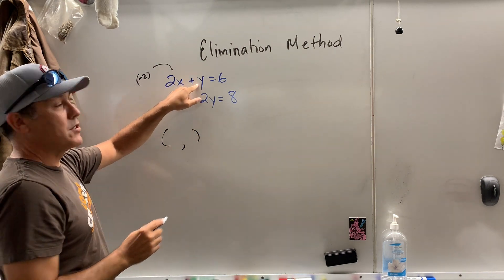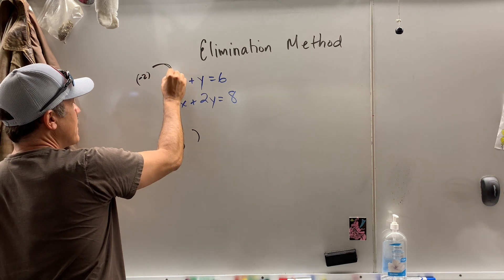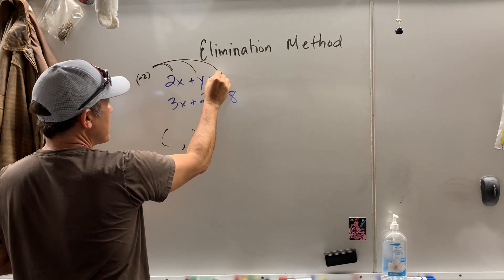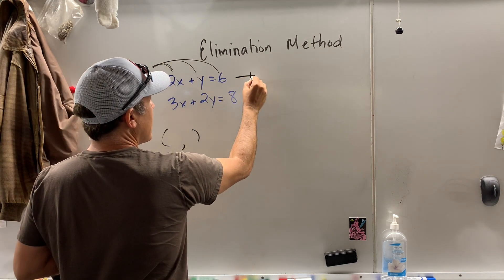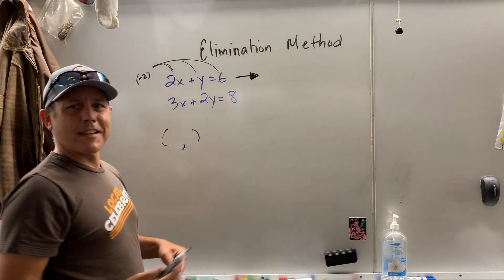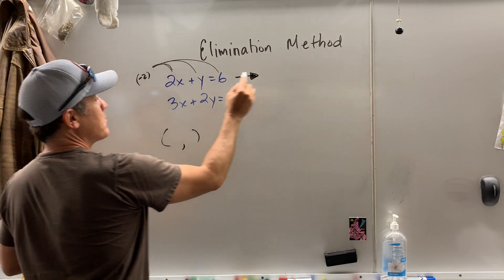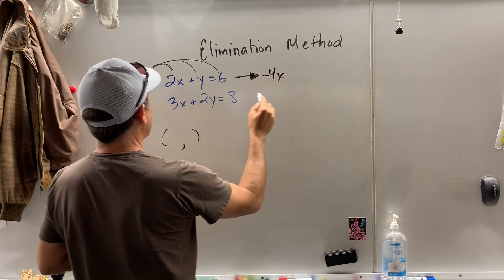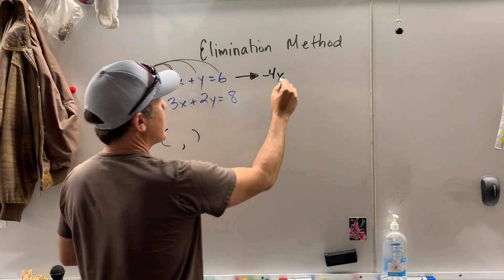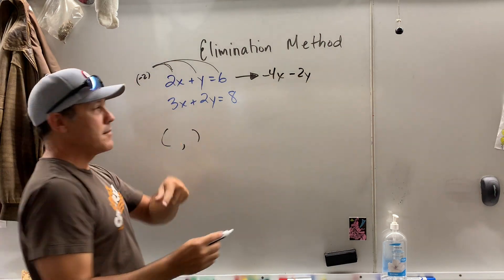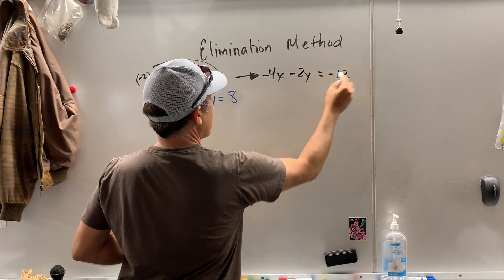Well, if I multiply this by negative two, I got to be equal and fair about it and multiply everything by negative two. So I invented this little method. At least I think I invented it. Put a little arrow. What is negative two times 2x, negative 4x, negative two times y, negative 2y, and negative two times six, negative 12.